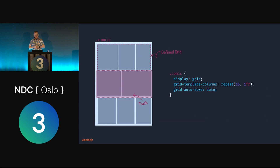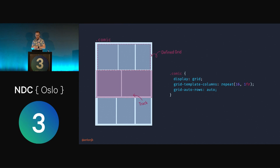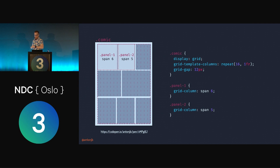We don't need to set rows with grid-template-rows because we can rely on the implicit grid to handle that for us. If content is added that falls outside the defined grid range, grid will automatically add new tracks to contain it. By default, implicit grid tracks are automatically sized, though we can change that with grid-auto-rows. Each panel can then span the number of columns needed — panel one spans six, panel two spans five — and they keep wrapping around.